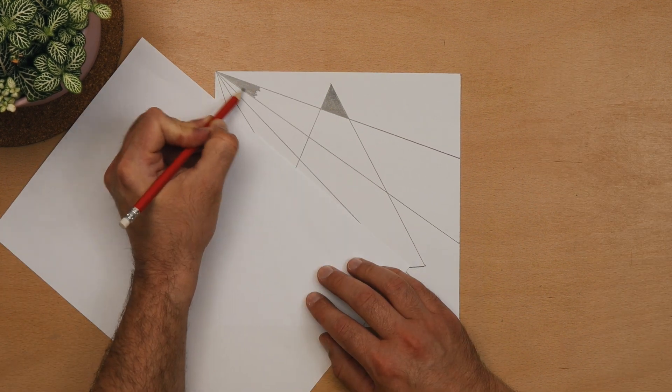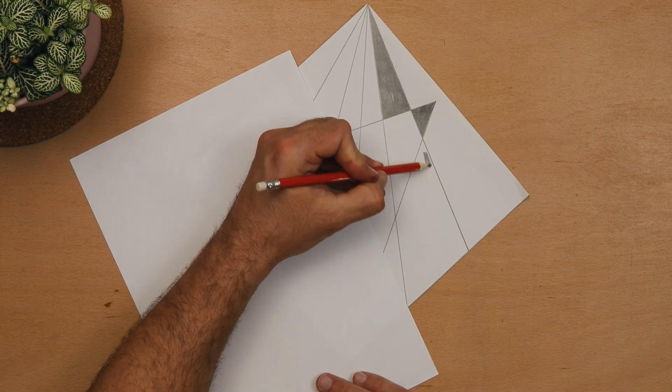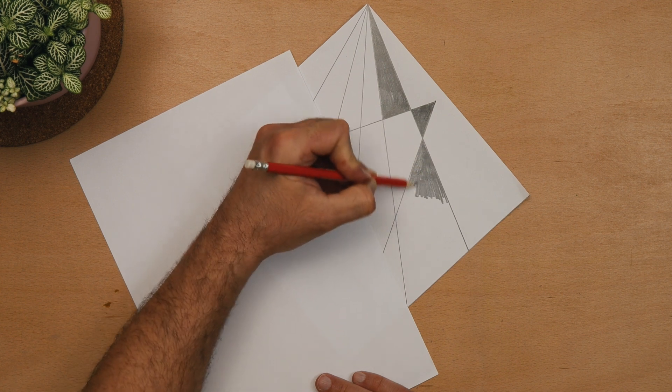Now in each part of the picture, shade the opposite parts to the one above either inside the shape or outside of it and keep doing this all the way down.